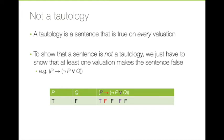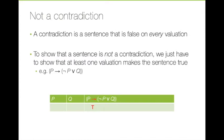When p is true and q is false, this sentence is false. Since a tautology can never be false but this sentence can be, we know it's not a tautology. Similar reasoning, but with opposite truth values, will apply to proving that something is not a contradiction.